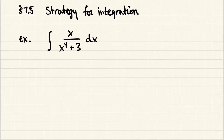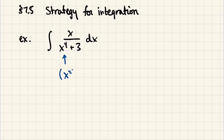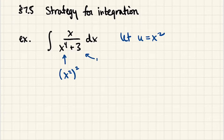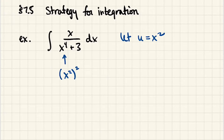Looking at this first example, there's no function whose derivative we can immediately see, so we're going to need some kind of technique. This x to the fourth in the denominator is very telling — we have a perfect square plus 3, where what's being squared happens to be x squared. So if we do a u-substitution letting u equal x squared, we'd eventually have u squared plus 3 in the denominator, which is the form for which a trigonometric substitution would be helpful.